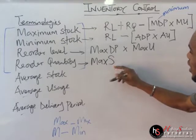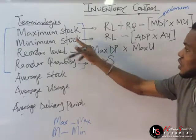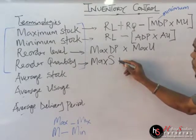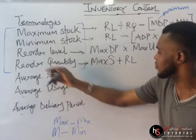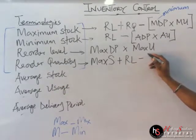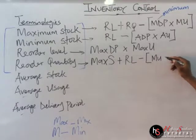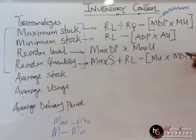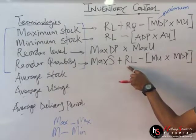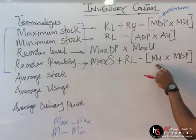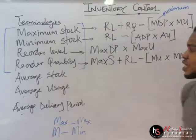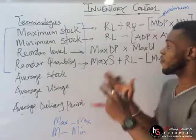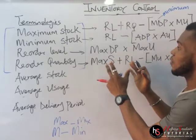For reorder quantity, the formula is: maximum stock plus reorder level minus, in brackets, minimum usage times minimum delivery period. So: maximum stock plus reorder level minus (minimum usage × minimum delivery period). Take note of it.